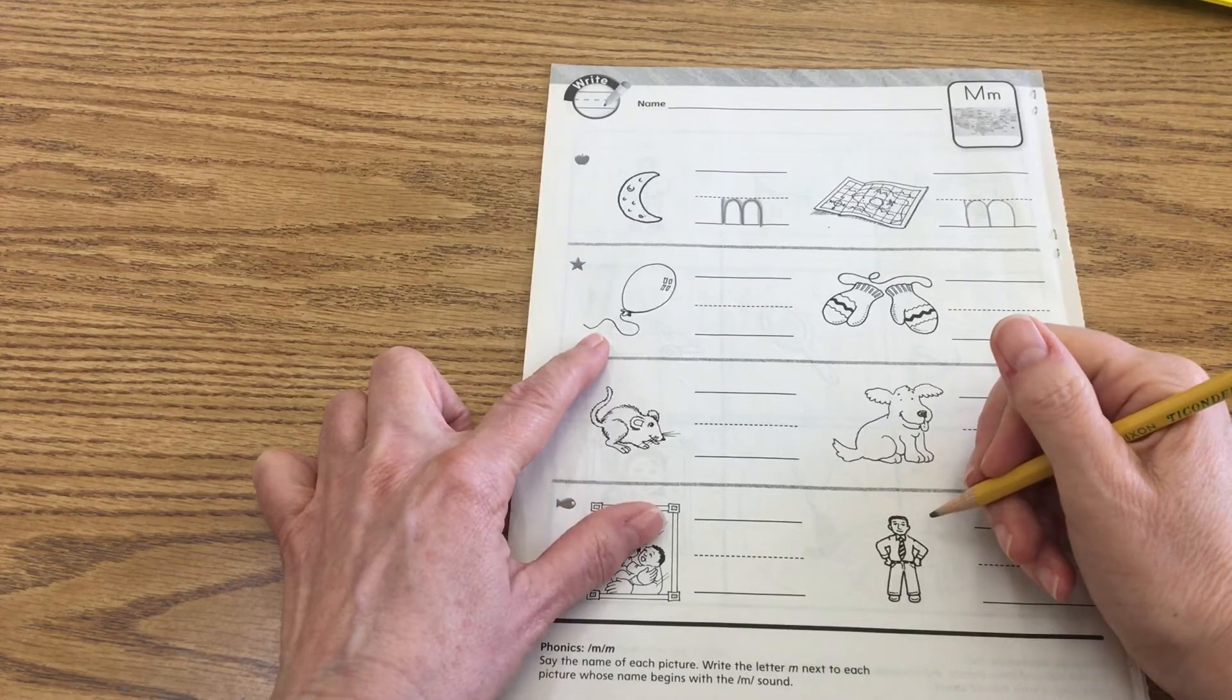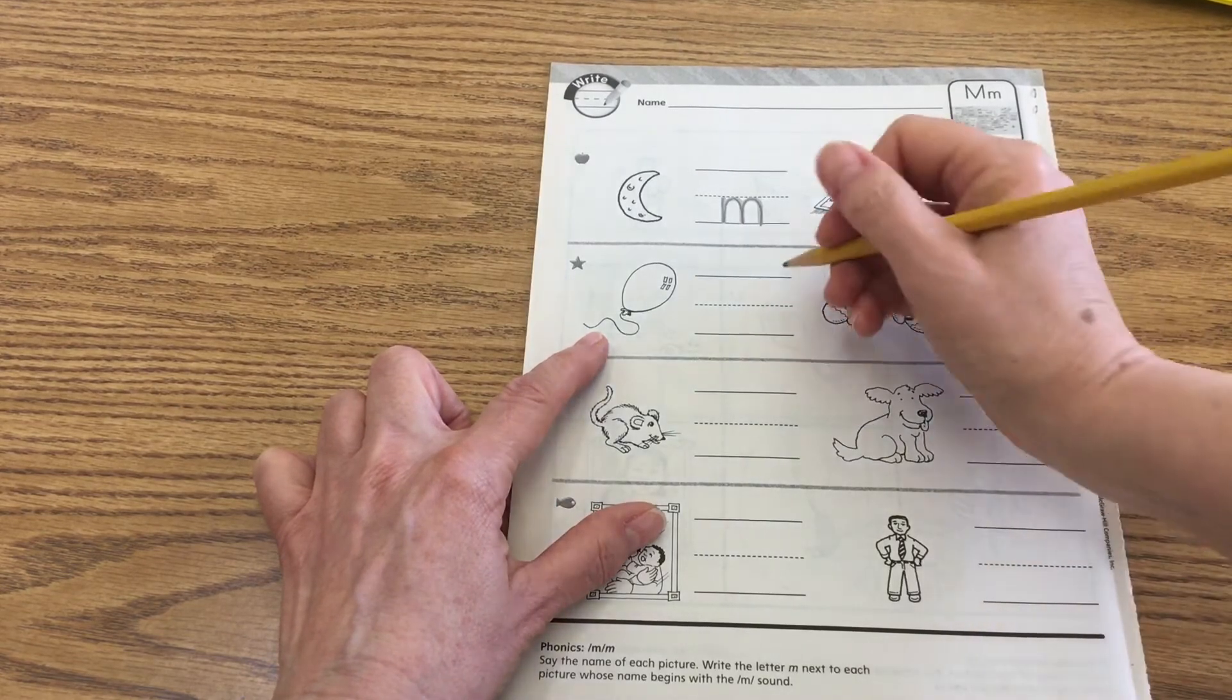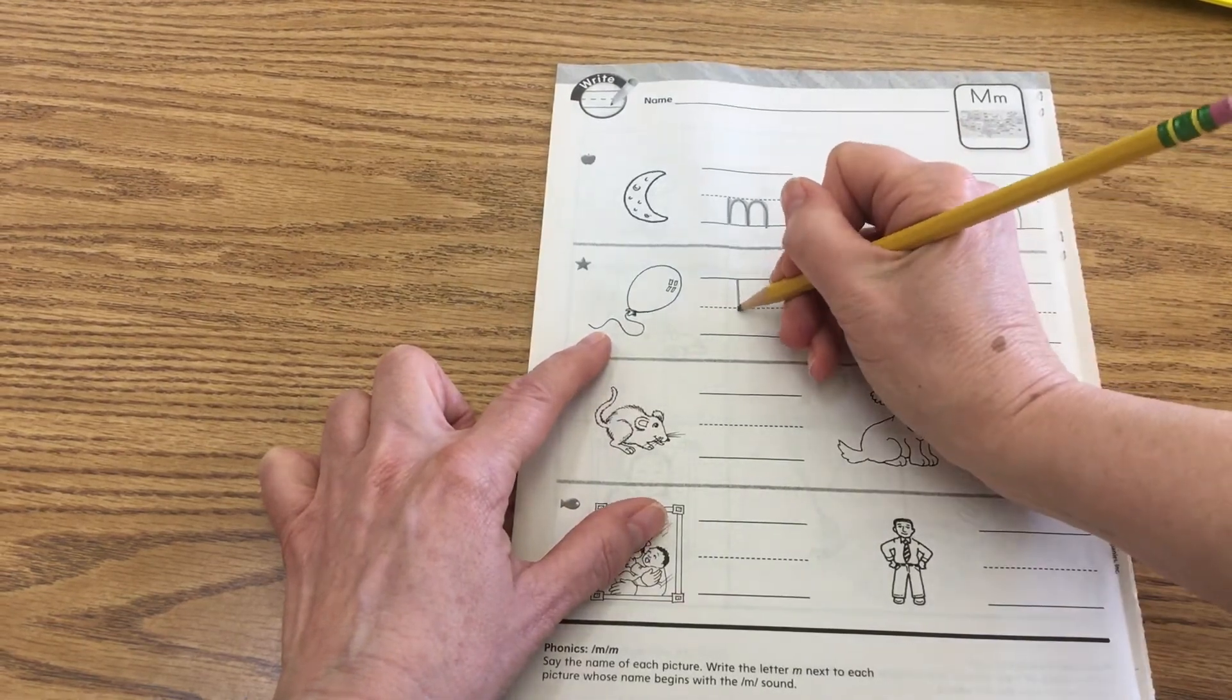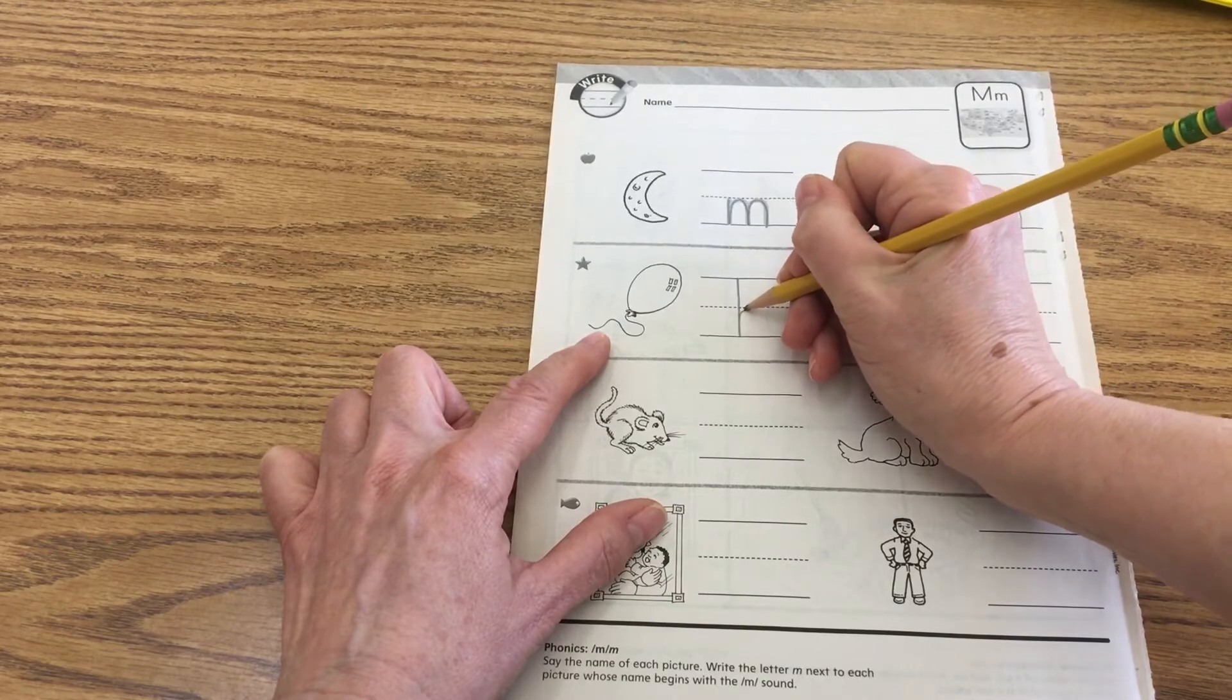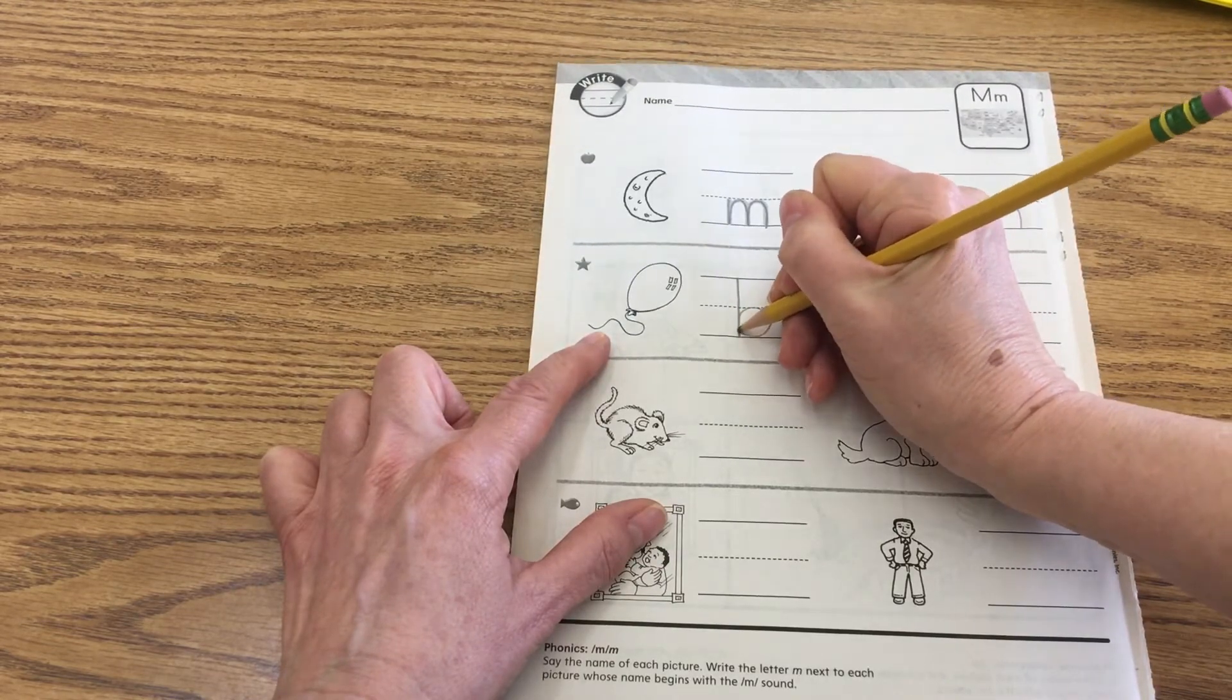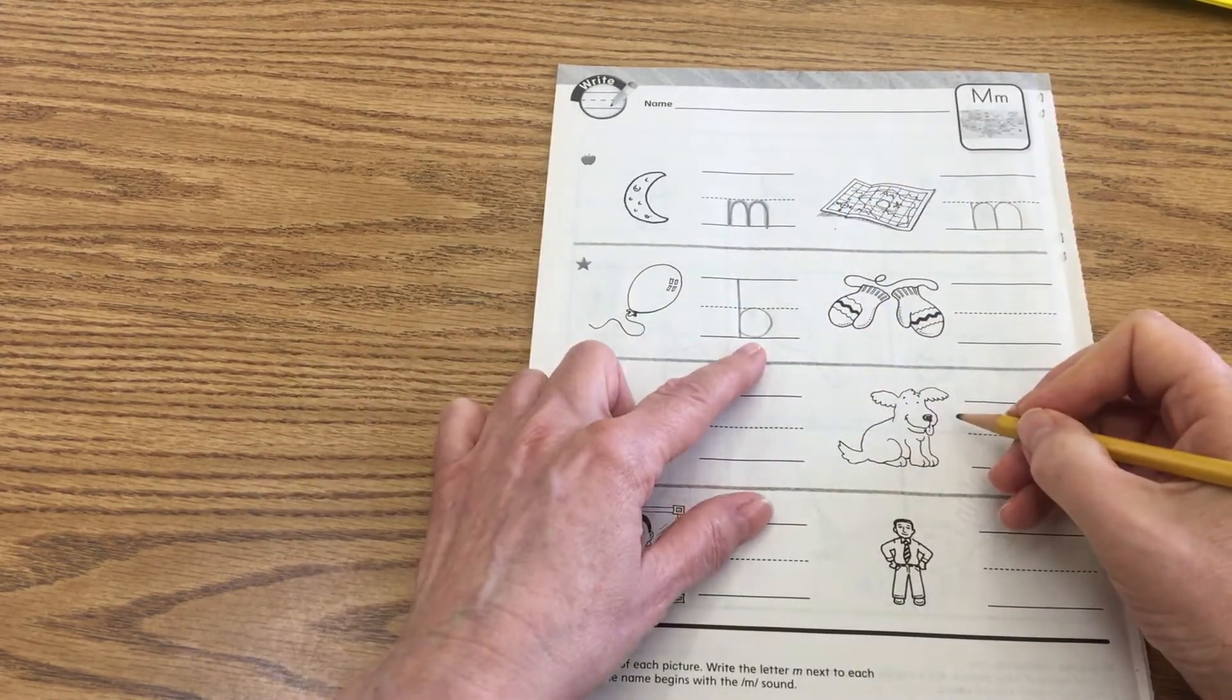Okay, this is balloon. Balloon. Buh, buh, buh. Let's go ahead and write that beginning sound here. We're going to put a stick, and then it gets a big belly. There's our buh, buh, bee for balloon. Okay?